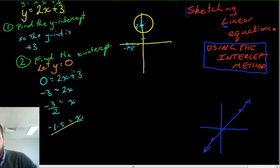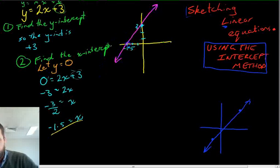Finally, join those two lines with a straight line. Make sure that it's clear that it passes through 3 and negative 1.5. And we've sketched our linear equation.